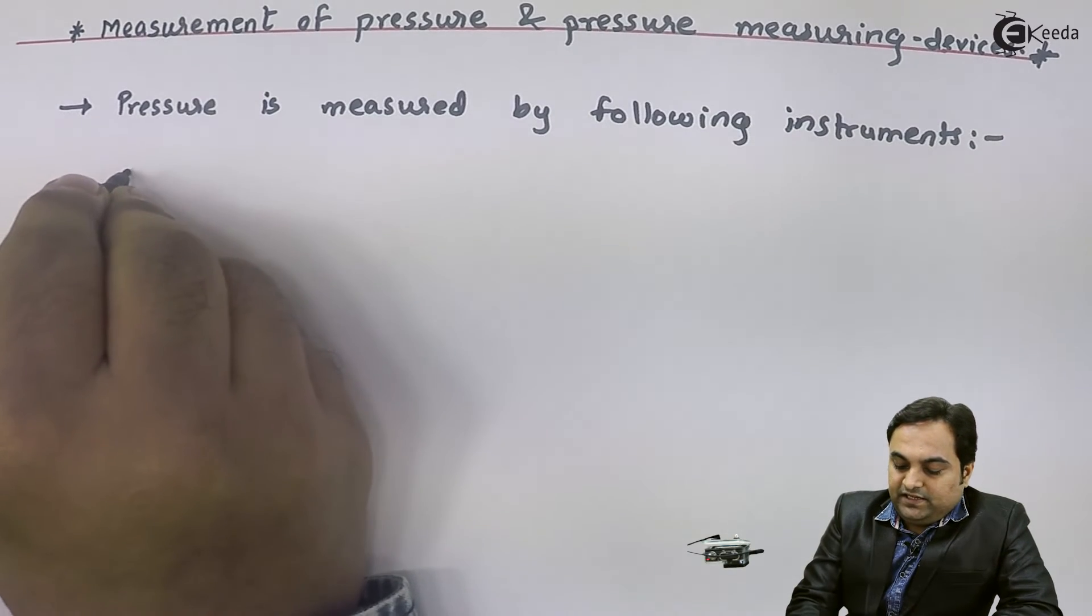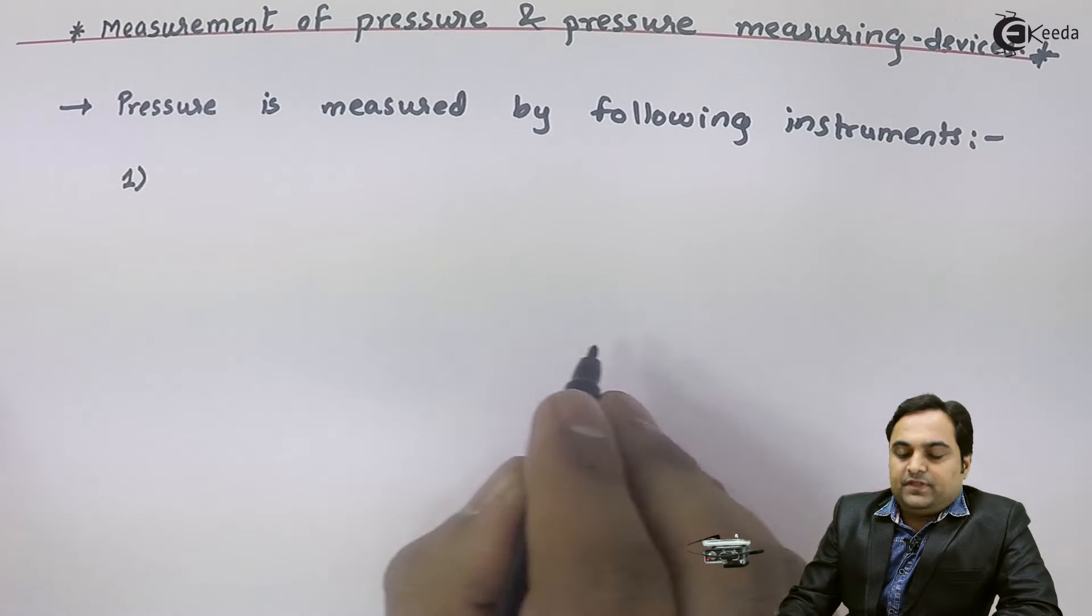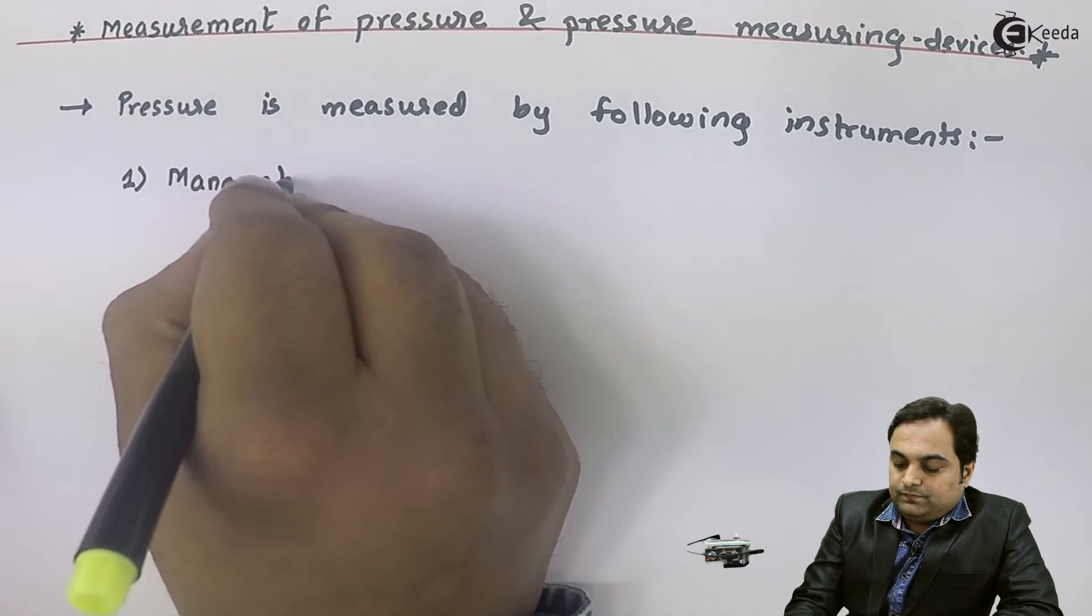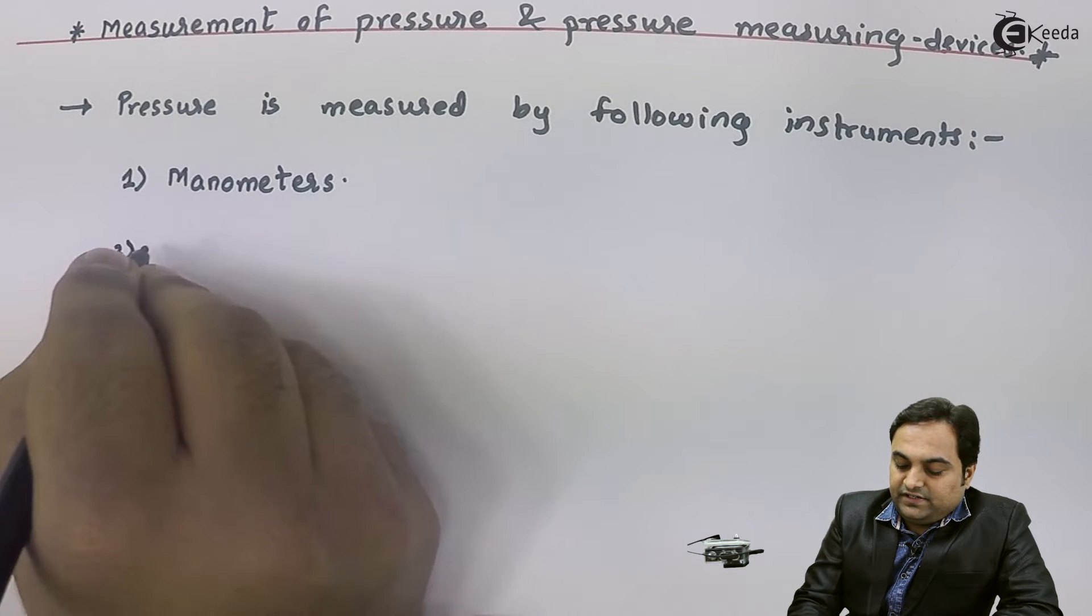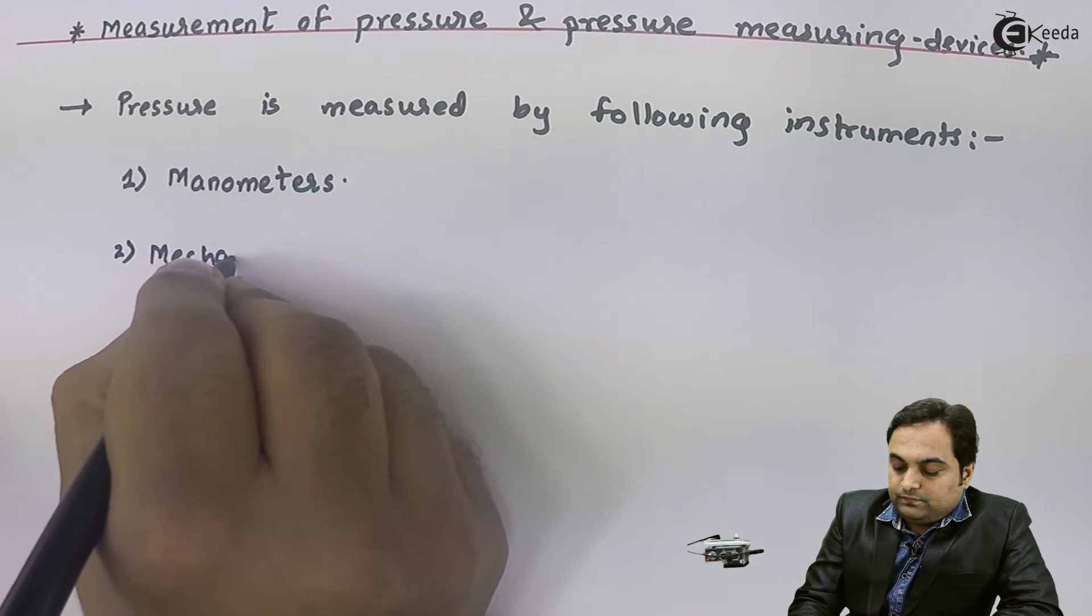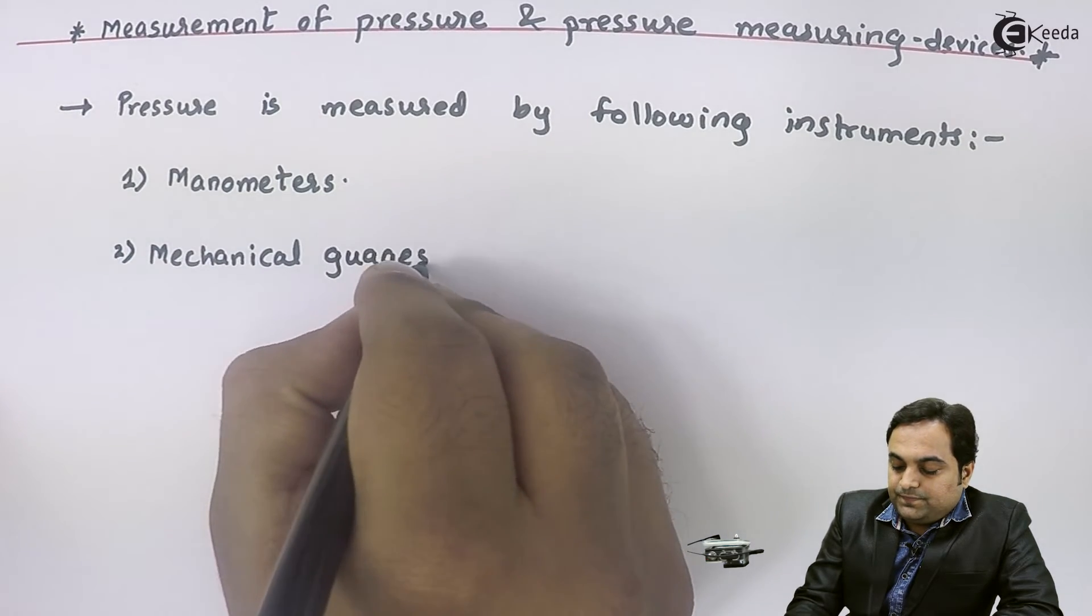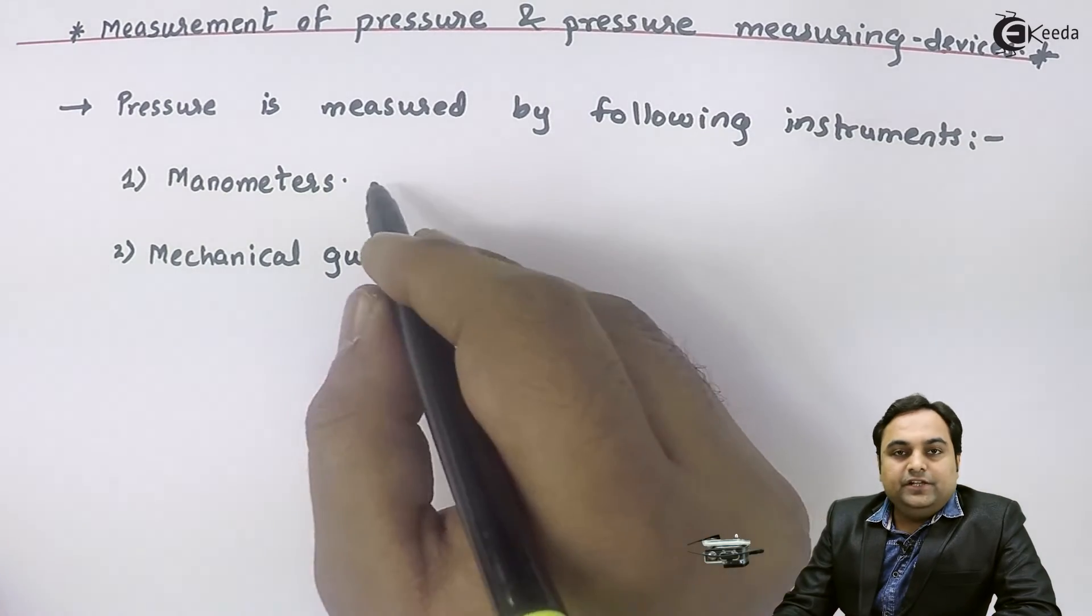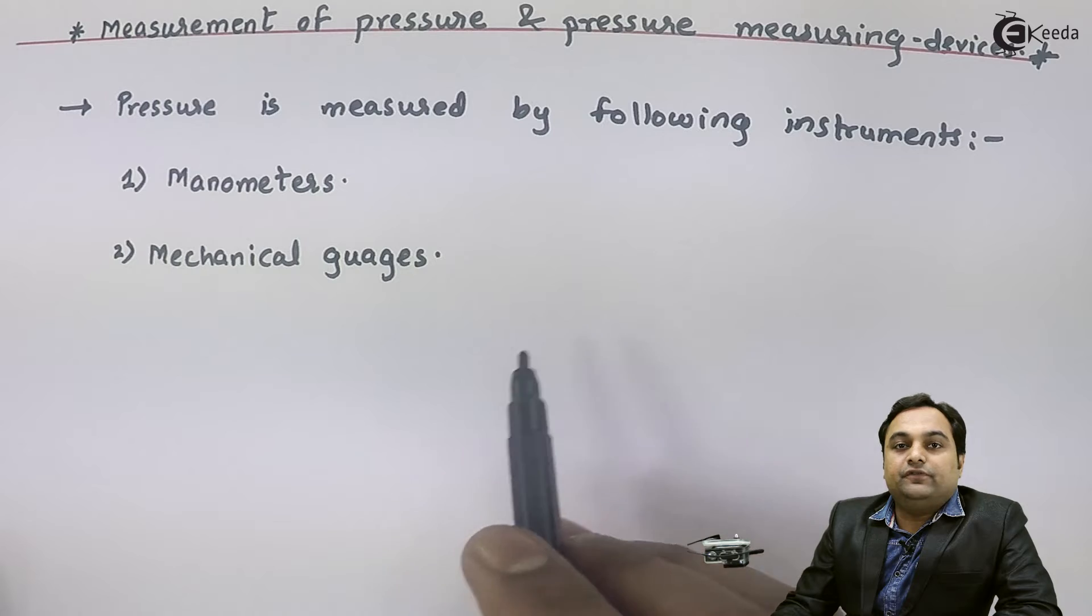Basically we have two devices. The first one is called manometers, and the second category is mechanical gauges. These are the two commonly used pressure measuring devices with the help of which we can measure pressure of any kind of fluid.